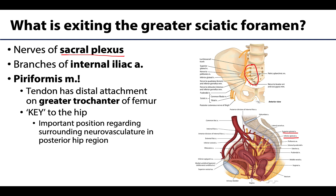So you have all this neurovasculature traversing this area. Here is that greater sciatic notch with the ligaments — the greater sciatic foramen would be right around this region here. In addition to the neurovasculature traversing the region, you will also have a muscle, which is your piriformis muscle.